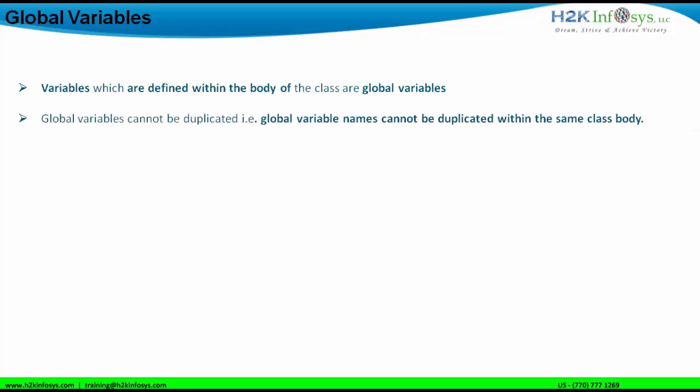Global variables cannot be duplicated, just as we have seen with local variables. When you give a variable name, that name cannot be duplicated for a global variable. If we give a duplicate global variable, the compiler will show a syntax error: 'duplicate field'. If we have a duplicate local variable inside the body of a method, the syntax error shown will be 'duplicate local variable'.